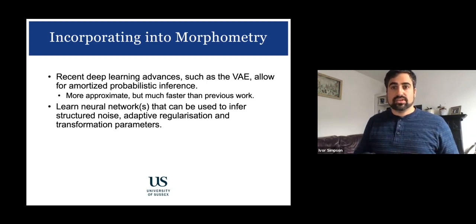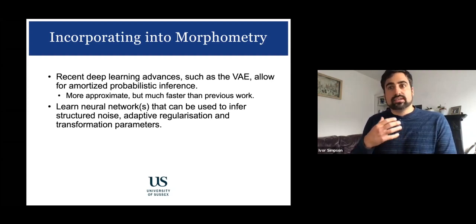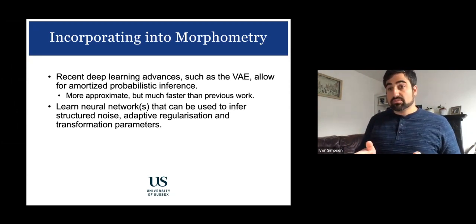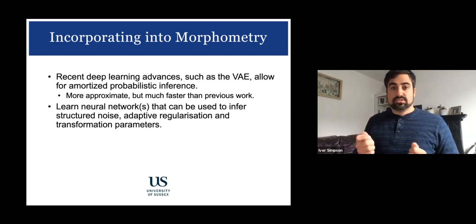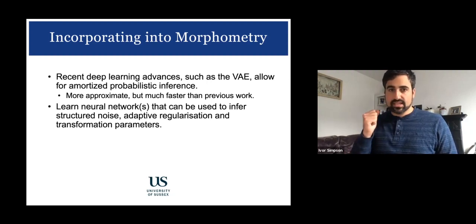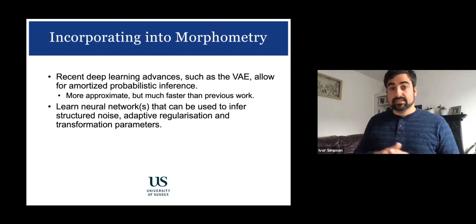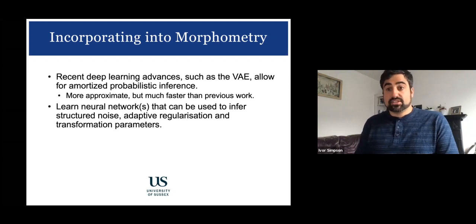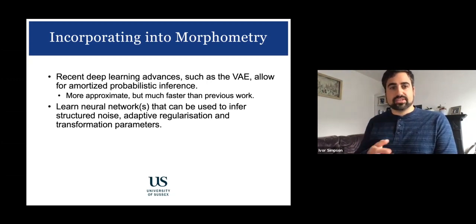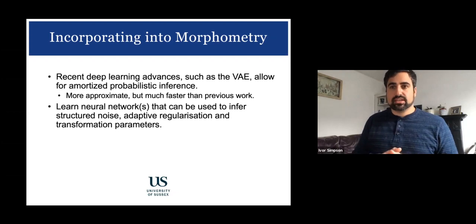One promising direction is amortized probabilistic inference — training a neural network to perform the same job as the variational Bayes model using the same mathematical objective, but replacing the expensive linear algebra with learned approximations. This could make things much faster and more amenable to wider use, while also enabling inference of structured noise, adaptive regularization, and the parameters of interest simultaneously.